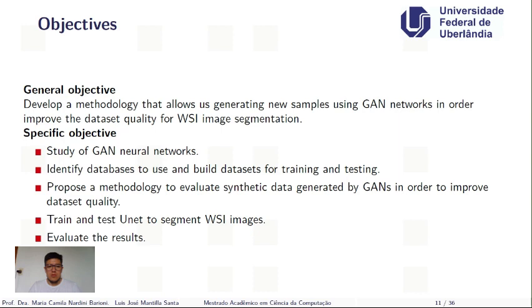The general objective is to develop a new methodology that allows generating new samples using GAN networks in order to improve dataset quality for WSA image segmentation. The specific objectives are: first, study GAN neural networks; second, identify databases and build datasets for training and testing; third, propose a methodology to evaluate synthetic data generated by GANs to improve dataset quality; fourth, train and test regular segmentation architectures such as U-Net to segment WSA images; and finally, evaluate the results.